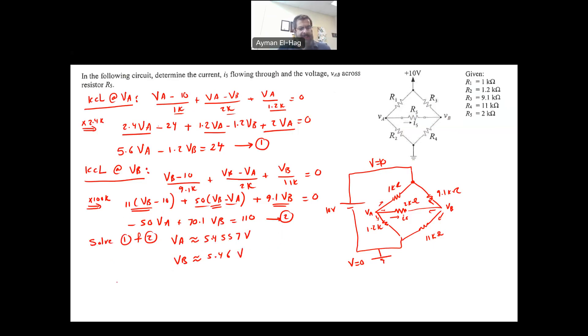Now I know VA and VB, from this I will find my I5, which is equal to (VA - VB)/R5, or 5.4557 - 5.46 divided by R5, which is equal to 2 kΩ, and this will give me -0.00214 milliamps. Very, very small current. So that is the classical way.